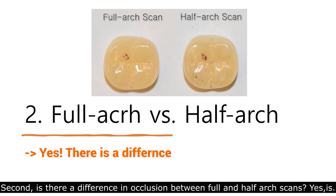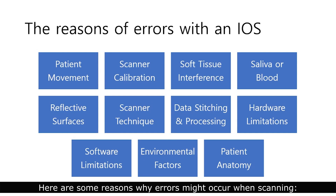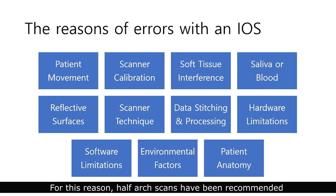Second, is there a difference in occlusion between full and half-arch scan? Here are some reasons why errors might occur when scanning. It stands to reason that the longer the scan span, the longer the error. Therefore, a full-arch scan is more likely to have data deformation than a half-arch scan. For this reason, half-arch scans have been recommended for single unit alterations.